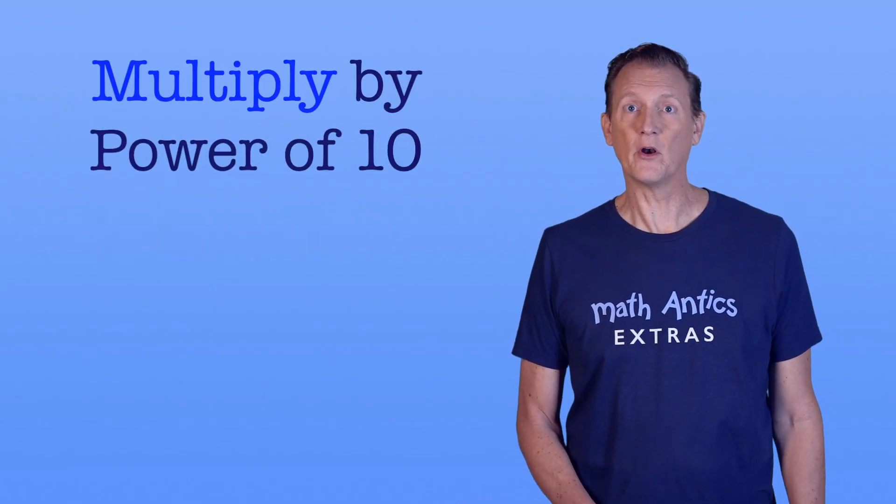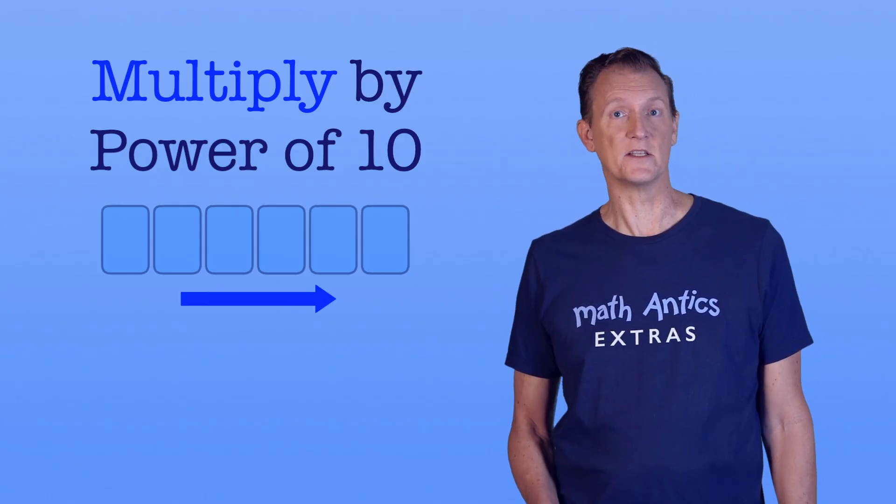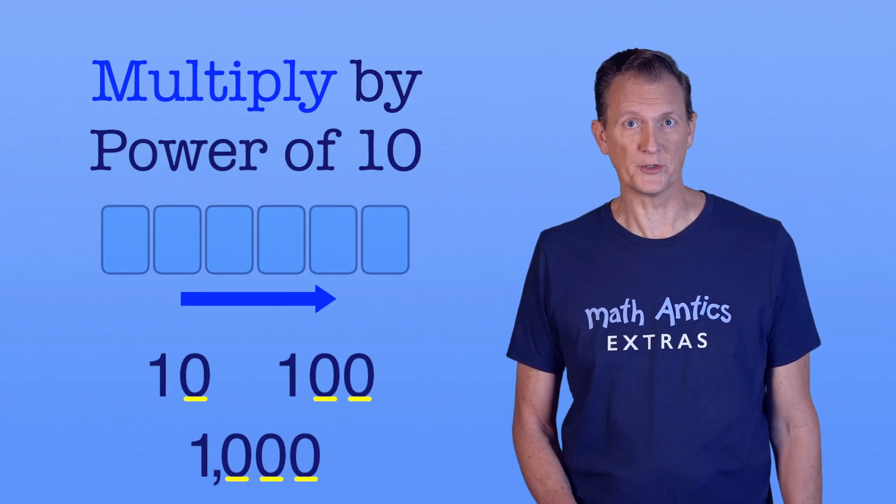So to multiply by a power of 10, you shift the number places to the right. And the number of places you shift by is the number of zeros in the power of 10 you're multiplying by.